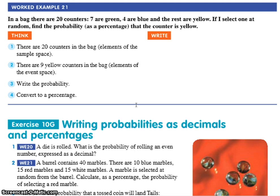First thing to do, in a bag there are 20 counters. 7 are green, 4 are blue and the rest are yellow. If I select one at random, find the probability as a percentage this time that the counter is yellow. First thing you've got to do, go around and highlight all the stuff you need.